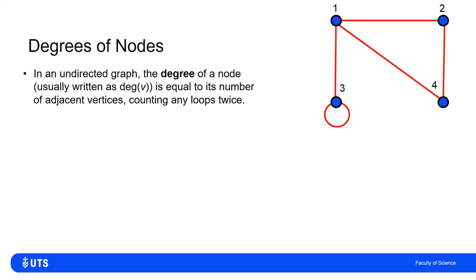For an undirected graph, we define the degree of a node — denoted deg of the node's name — as equal to the number of adjacent vertices. Here we count a loop twice. Some definitions count a loop once, but here we define it counting a loop twice. So the degree of vertex one is three: there are three edges joining it — the edge between one and three, the edge between one and four, and the edge between one and two.